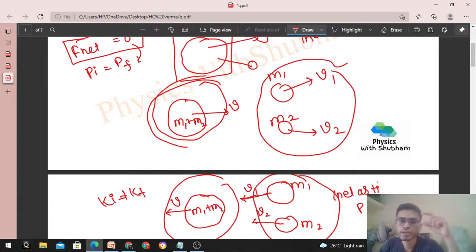Then in the upper equation, the upper process where you have the explosion happening, there also K initial will not be equal to K final.